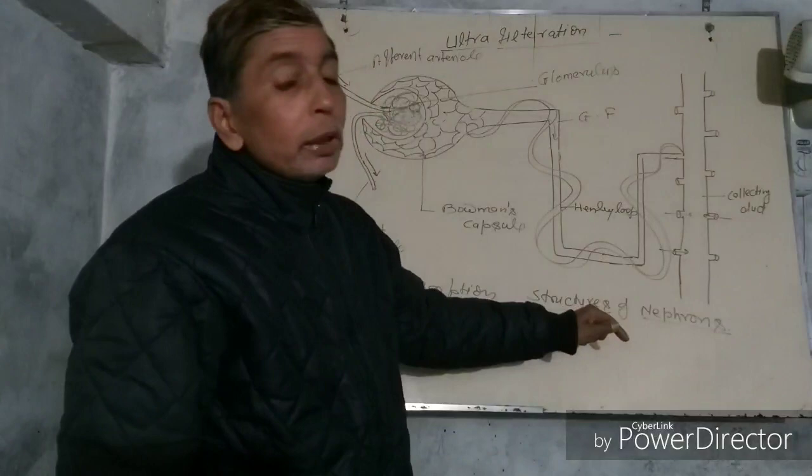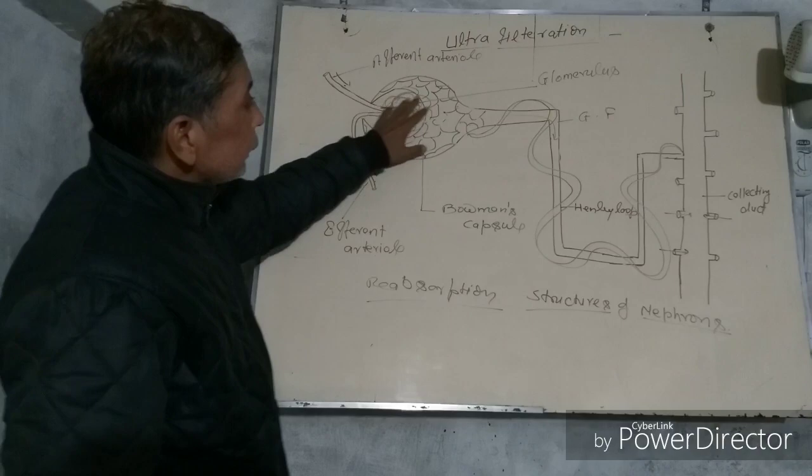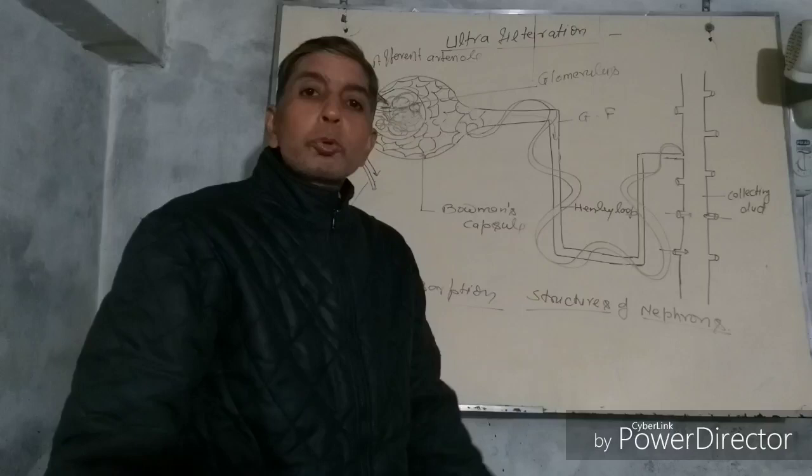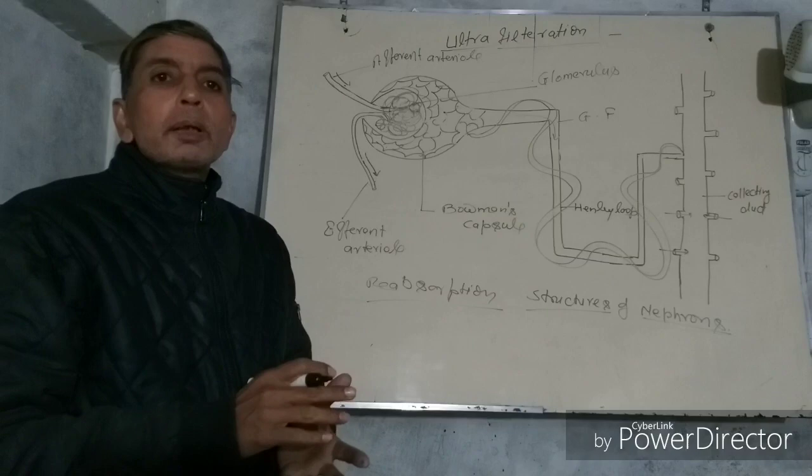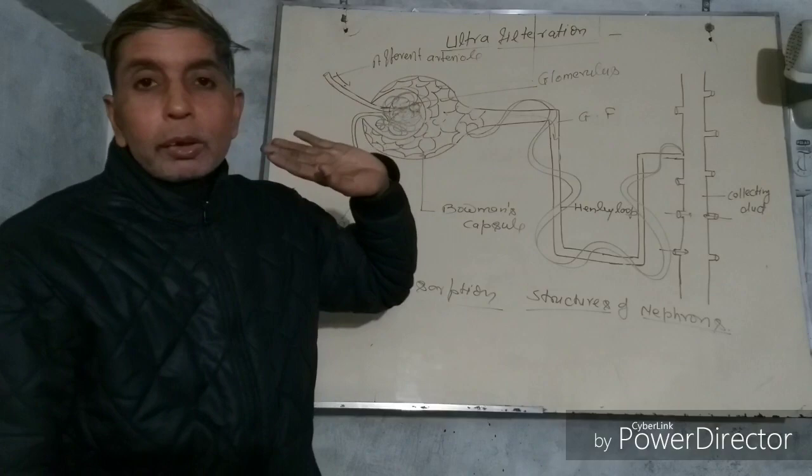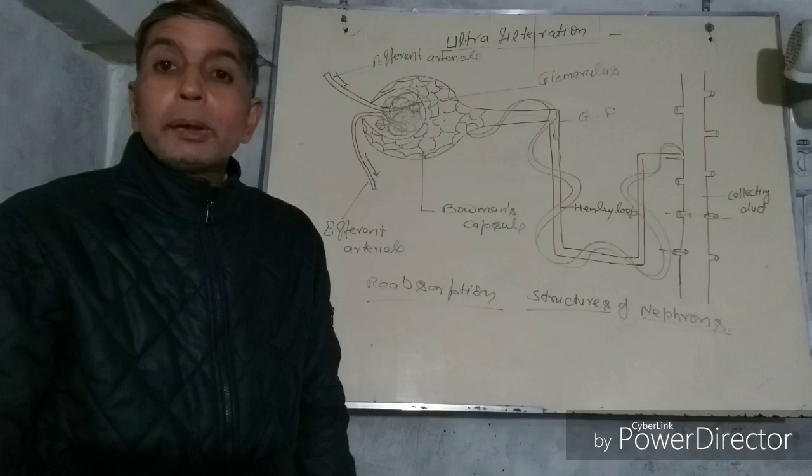The ureter is a tube-like structure, and the ureter opens into the urinary bladder. The system by which the nephron filters the blood is called ultrafiltration. It removes toxic substances, extra water, and extra ionic substances present in the blood, filtered by the glomerulus. The glomerulus filters every extra thing available in the blood, because the pH of blood is 7.4 and the viscosity of the blood is 4.7.